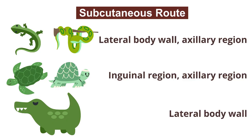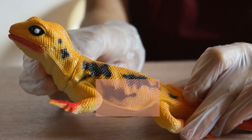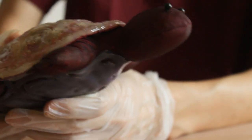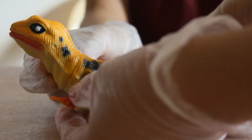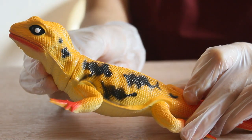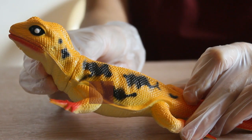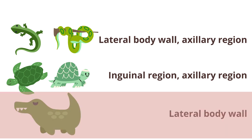In squamates, the preferred site for giving subcutaneous fluids or medications is over the lateral body wall. In chelonians, subcutaneous injections can be given in the axillary and inguinal regions. Additionally, in some lizard species, small volumes of medications can be administered in the axillary region. Subcutaneous injections in crocodilians are rarely employed but can be given over the lateral body wall.